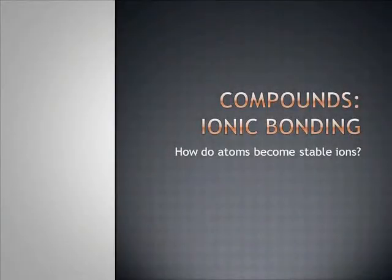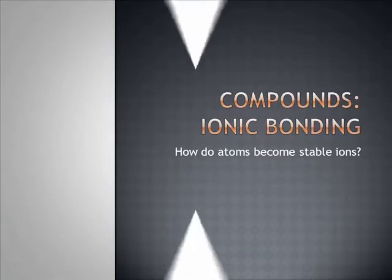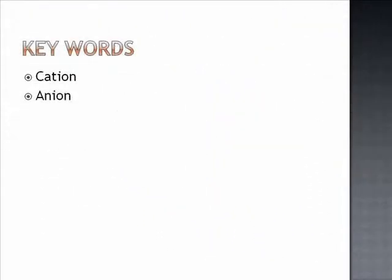Compounds. Ionic bonding. How do atoms become stable ions? Key words for this question are cations and anions. Expect to use and define these words in your answer to the question.